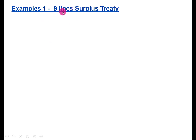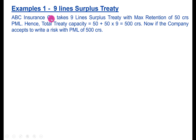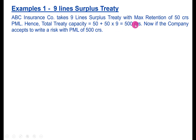The first example is a nine lines surplus treaty. Let us assume that ABC Insurance Company takes a nine lines surplus treaty with a maximum retention of 50 crores. Since it is nine lines, the total capacity would be 50 plus 450 (50 into 9), giving a total of 500 crores.